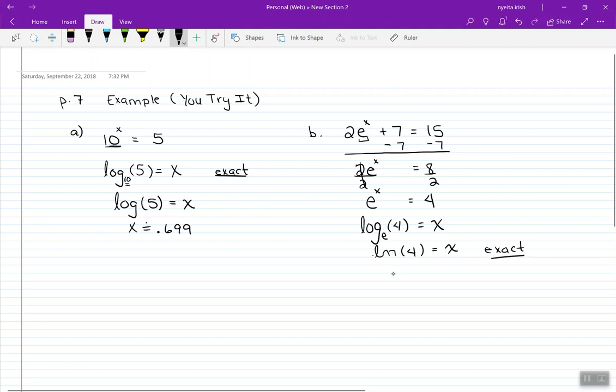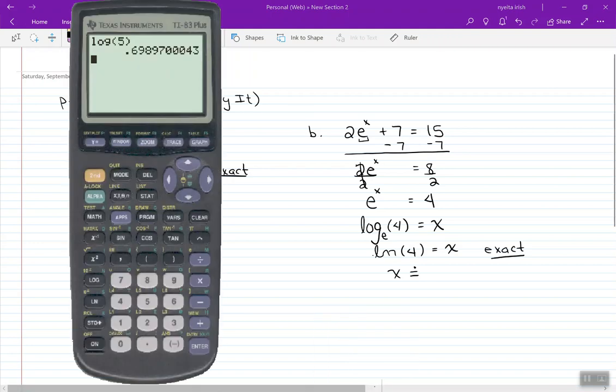For my decimal approximation, I'm going to type in the natural log of 4. And we're looking for 3 decimal places. I look to the 4th. It's just the number 2. So at this point, it's just going to be 1.386.